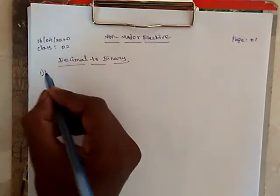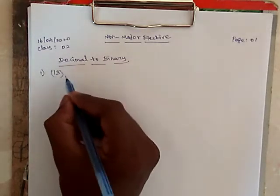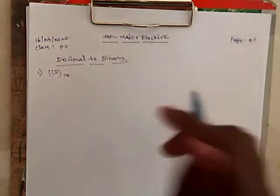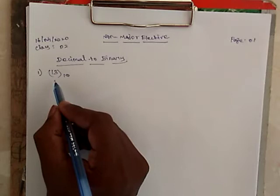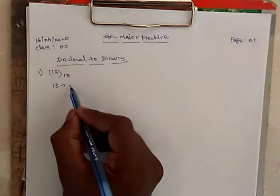So, example 1, take this number 13. So, 13 base 10 represents decimal number system. For the conversion of decimal to binary system, this 13, actually this number 13 is called integer.